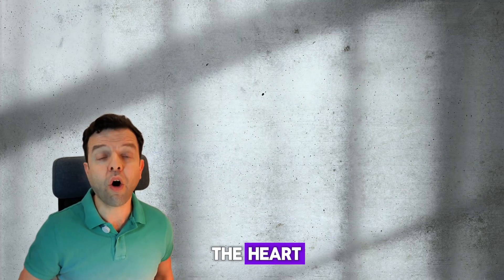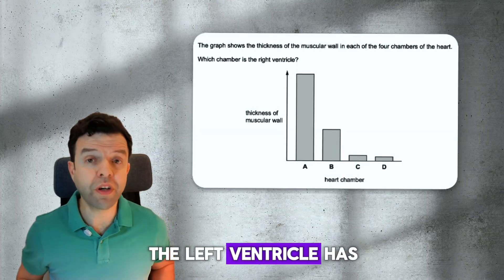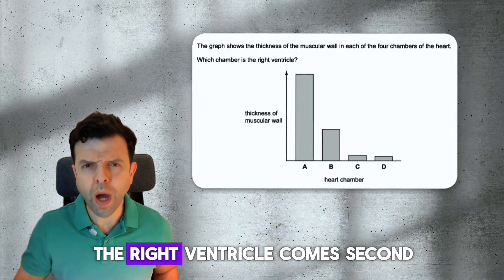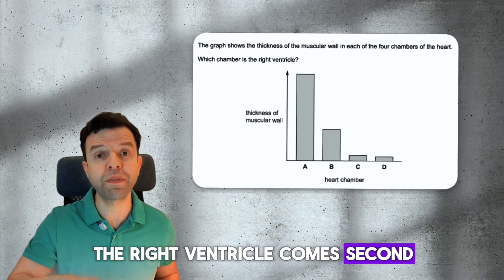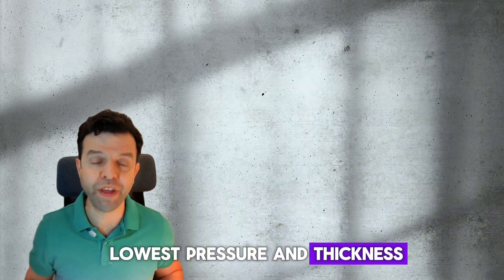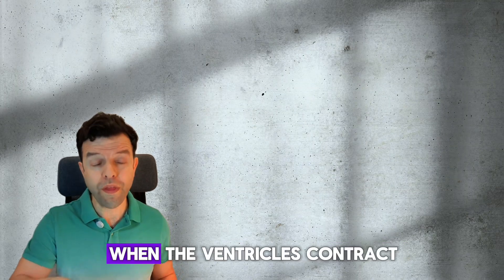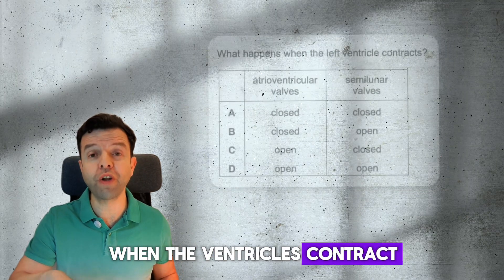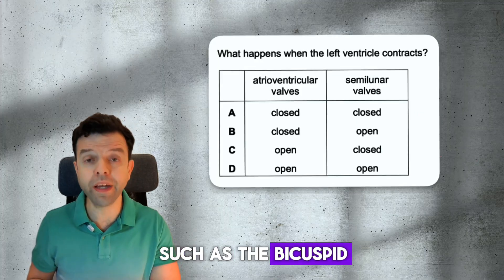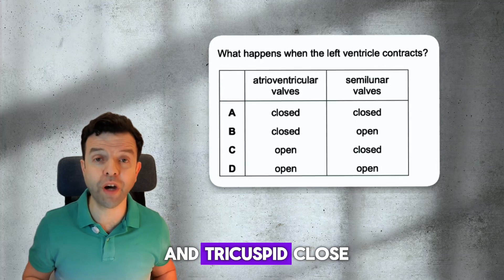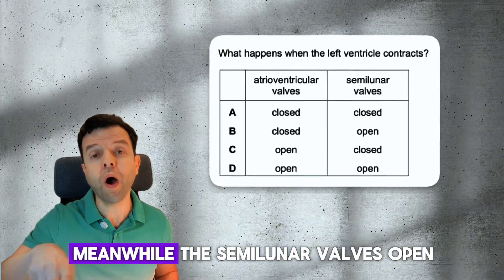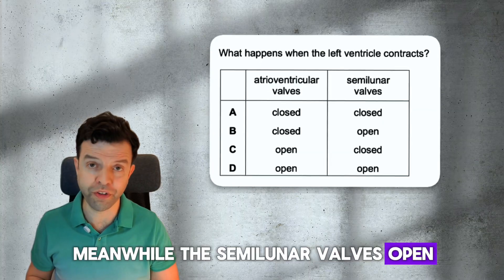Let's now talk about the heart. The left ventricle has the thickest wall and the highest pressure. The right ventricle comes second. The atria have the lowest pressure and thickness. When the ventricles contract, the atrioventricular valves, such as the bicuspid and tricuspid, close. Meanwhile, the semilunar valves open.